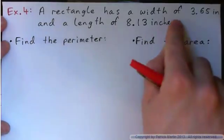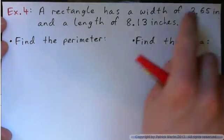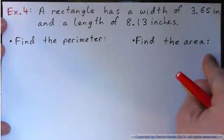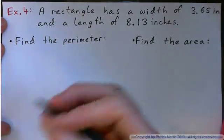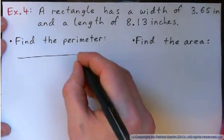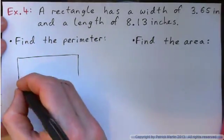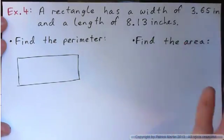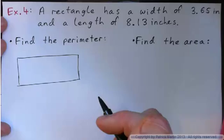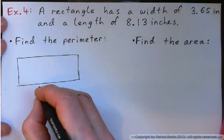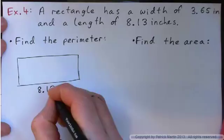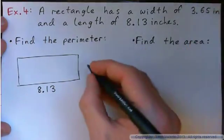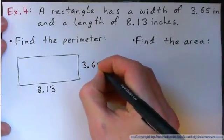Example four. A rectangle has a width of 3.65 inches and a length of 8.13. Find the perimeter, then find the area. Please draw it. Always draw the thing. Always draw if you can. If it's ever talking about a shape. So, one length, one size of the sides is 8.13 inches. The other is 3.65.